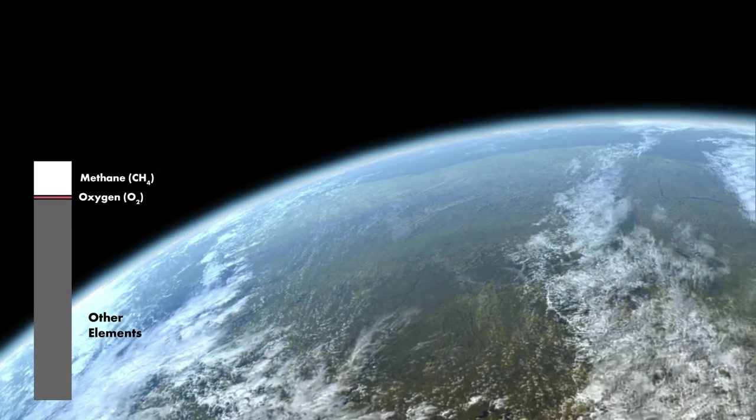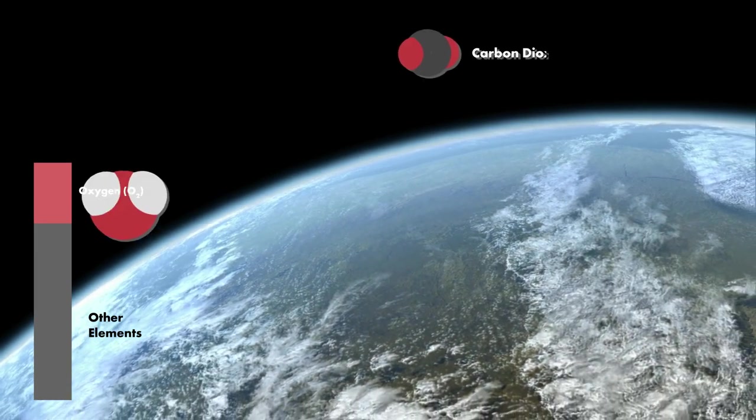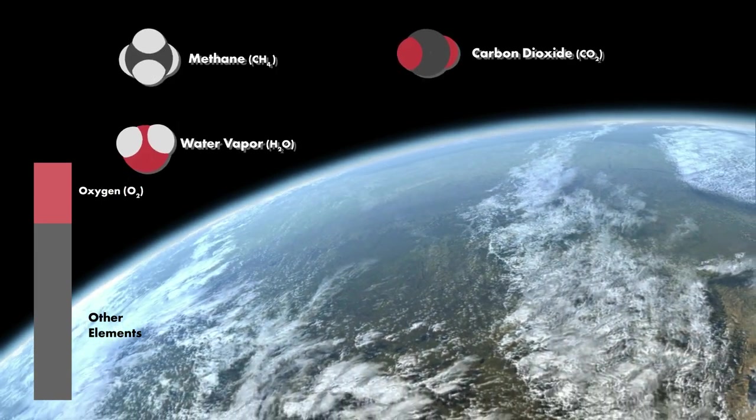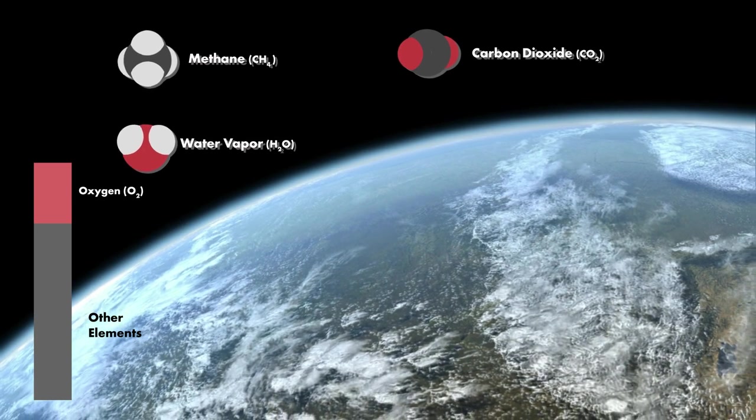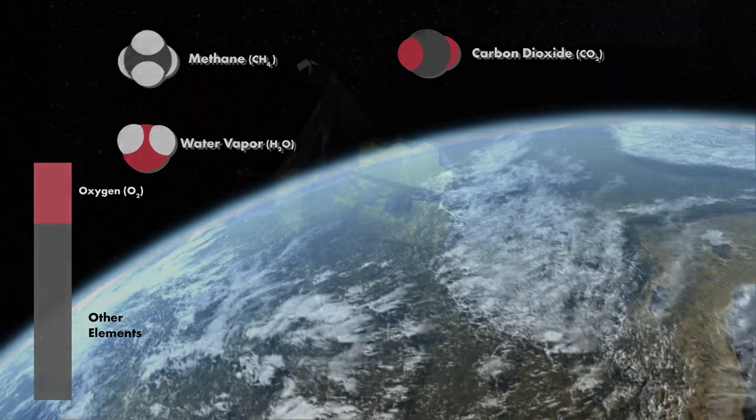Life changed the atmosphere of our Earth over time, increasing the oxygen and decreasing the methane. By taking a virtual sample of the atmosphere of these exoplanets, we can look for evidence of carbon dioxide, water vapor, and methane—signs of life as we know it.